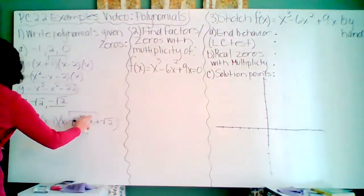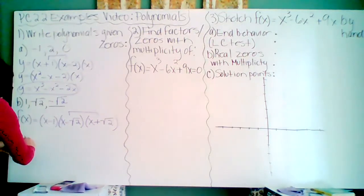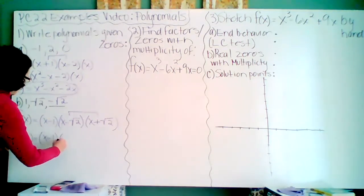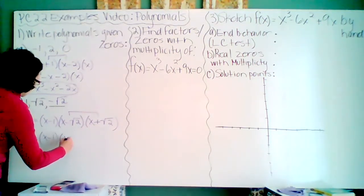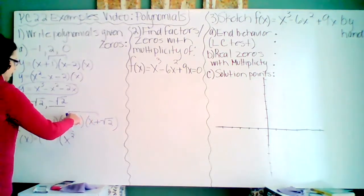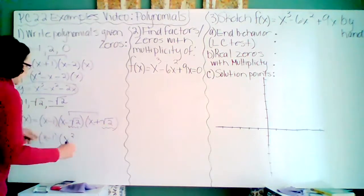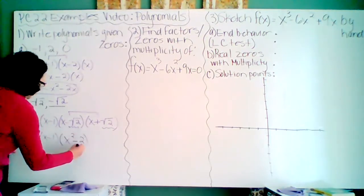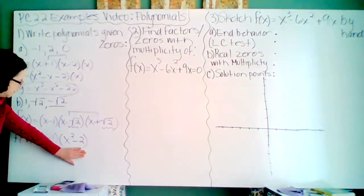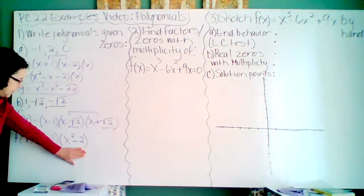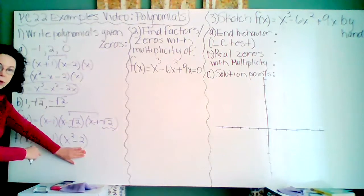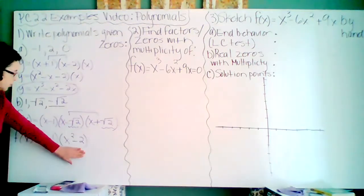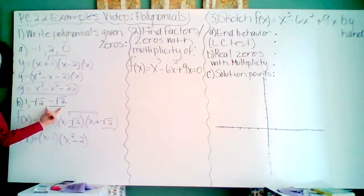Okay, so let's go ahead and multiply these two binomials first. Notice I'm just hanging on to my x minus 1 factor. Let's multiply here. x times x is x squared. Notice that the outers and the inners eliminate. And so last, a negative square root of 2 times a positive square root of 2 is a negative 2. Again, notice if I made you take this polynomial here and set it equal to 0 to solve it, you would add a 2 and take the square root and you would have plus or minus the square root of 2. And so this really is the polynomial that goes with these two zeros.